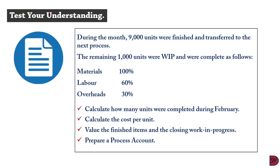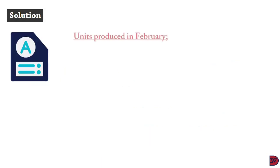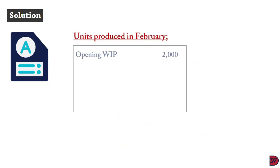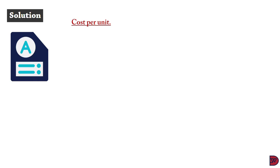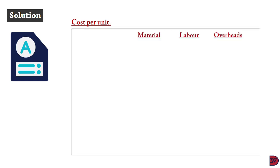For the solution, we start with the units fully completed in February. The opening work in progress of 2,000 units is processed first, followed by the 10,000 current units, of which 1,000 were not fully completed. The total comes to 11,000 units. For the cost per unit, we seek to spread the cost for each category over its equivalent units.